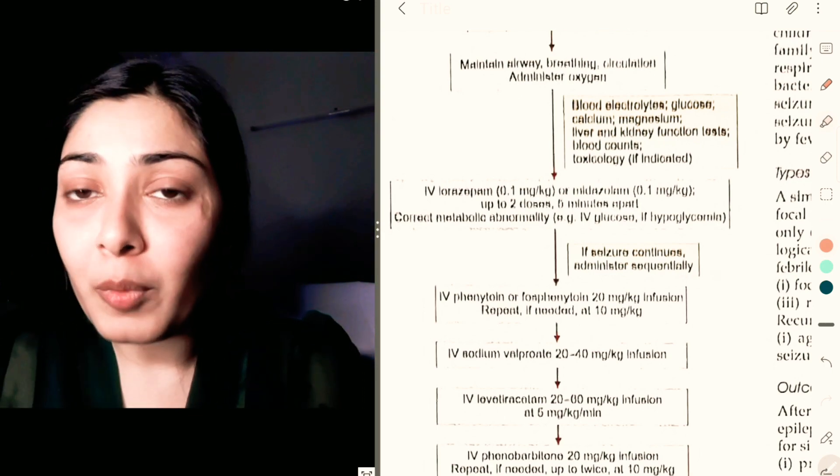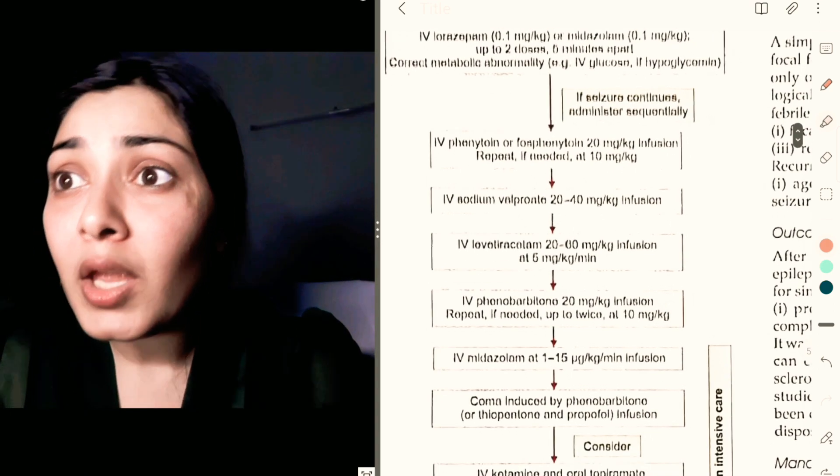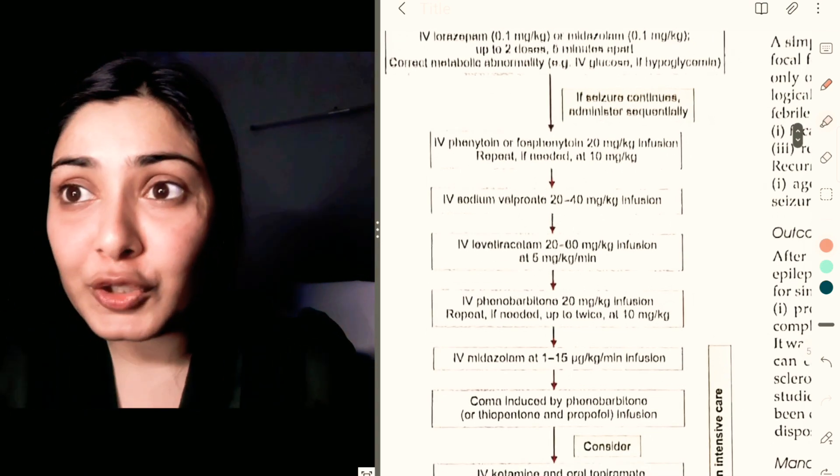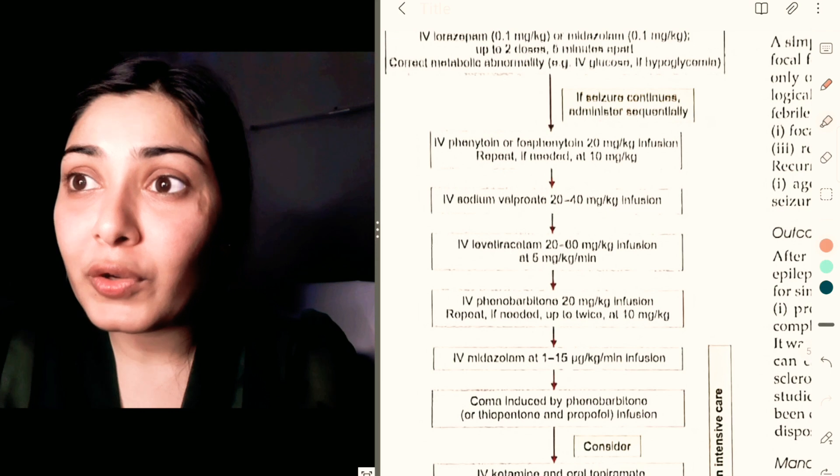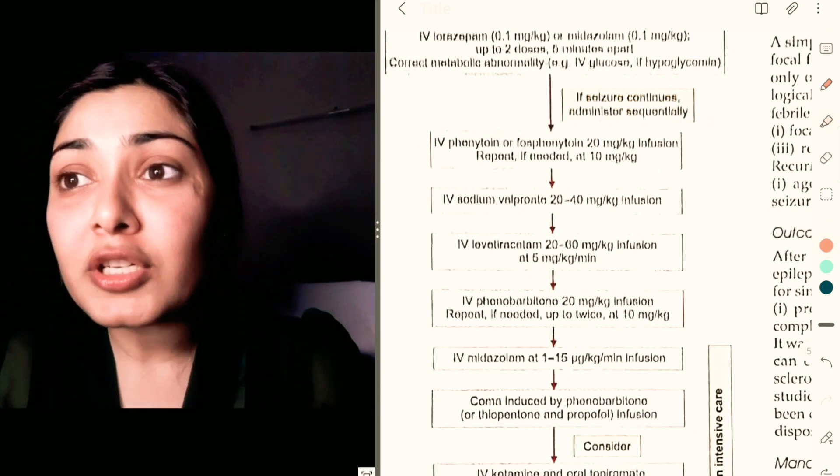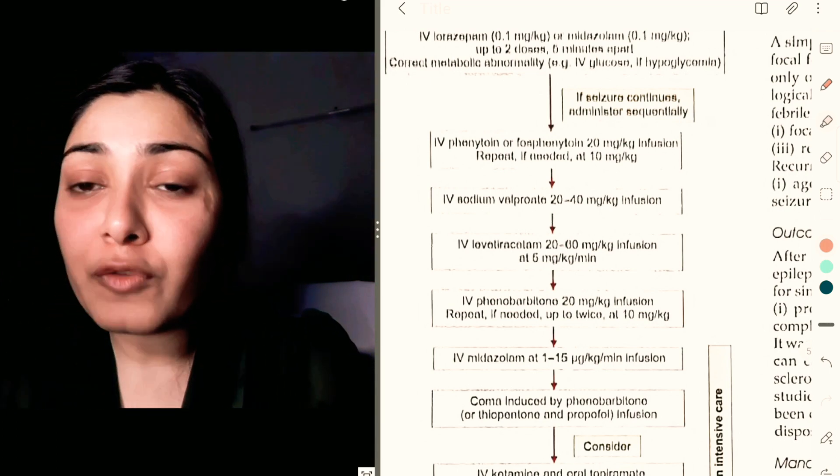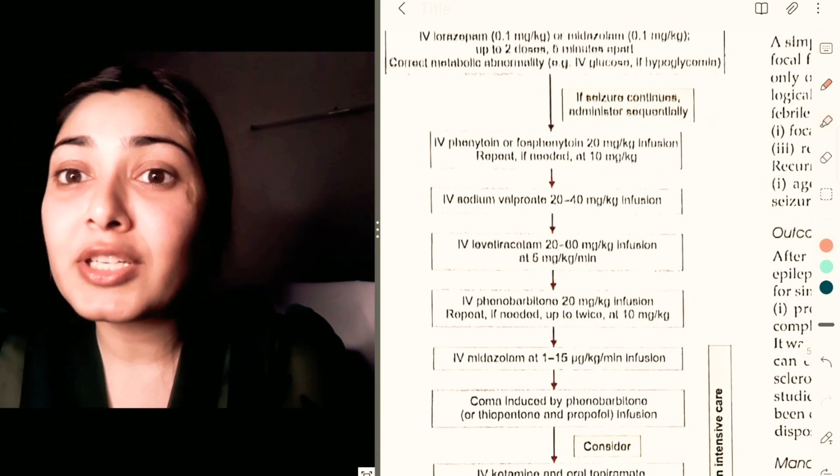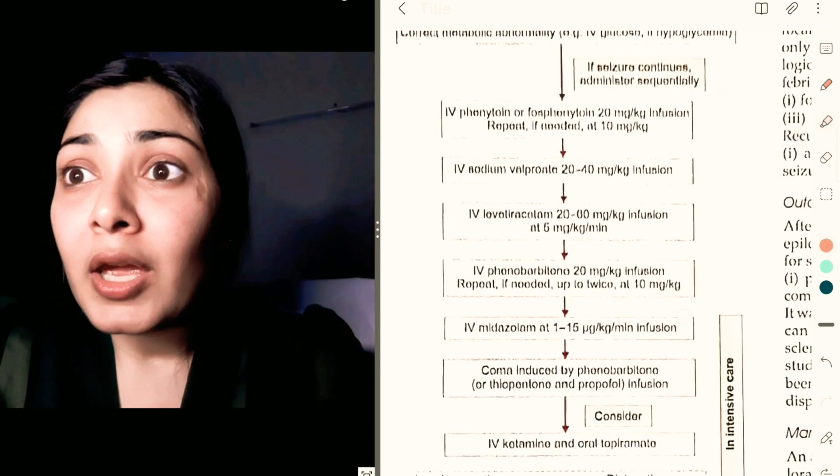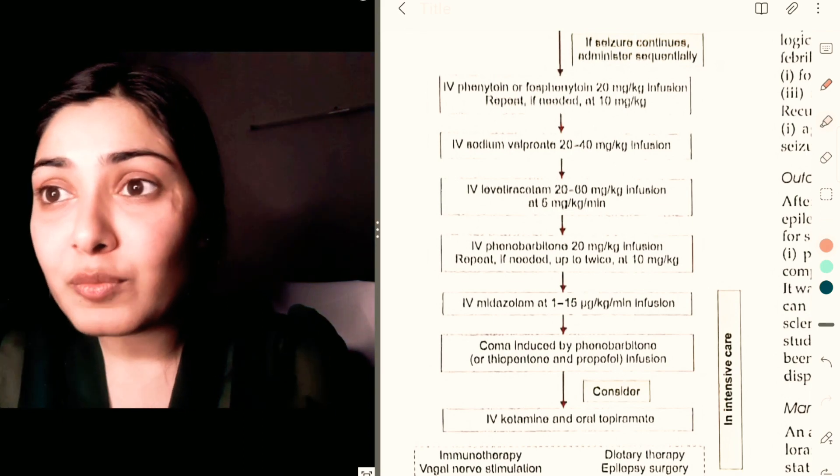If the seizure still continues, you administer phenytoin or fosphenytoin at the dose of 20 mg/kg, and you can repeat if needed up to 10 mg/kg. So phenytoin loading dose can go up to 30 mg/kg in total. The second drug here mentioned is valproate 20 to 40 mg/kg, levetiracetam 20 to 60 mg/kg.